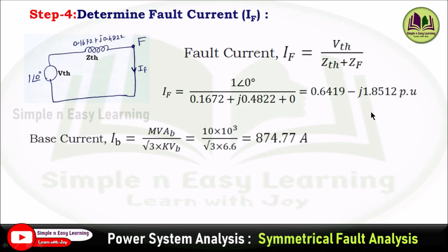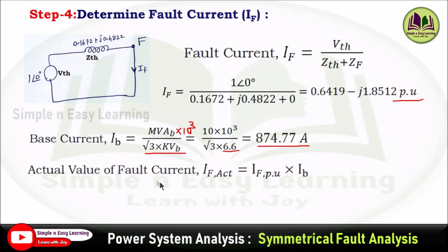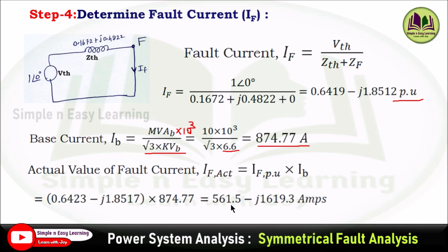The fault current is obtained in per unit. To get the actual value, multiply by the base current. Base current IB = MVA_base × 10³ / (√3 × KV_base) = (10 × 10³) / (√3 × 6.6) = 874.77 A, since the fault is in section 3 where base kV = 6.6. Actual fault current = per unit × base = 561.5 − j1619.3 amperes.